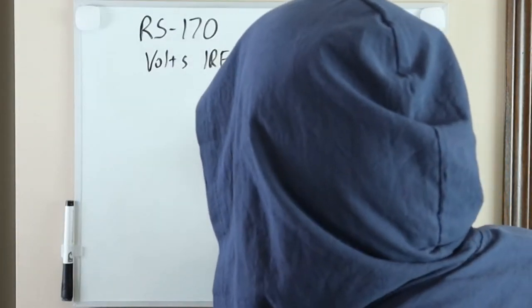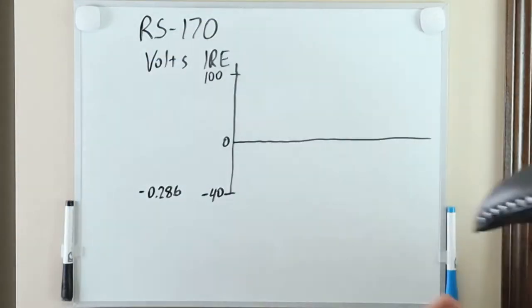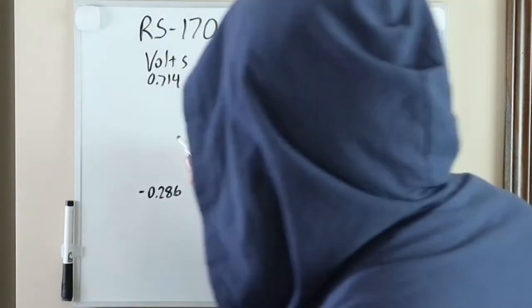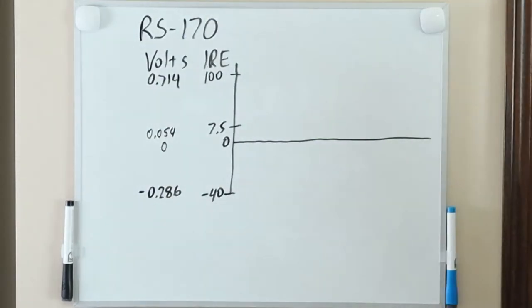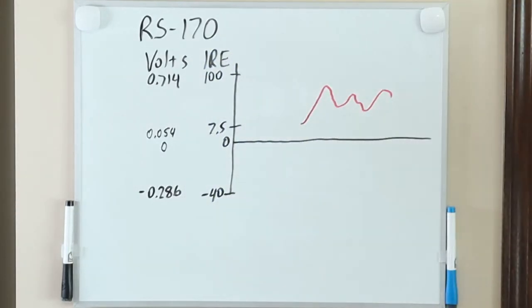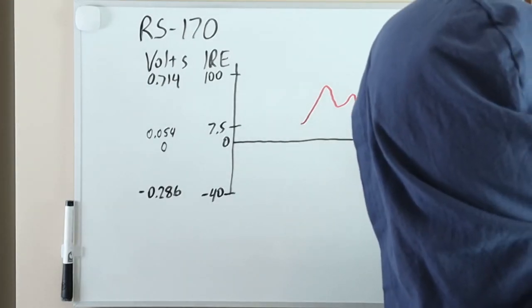Typically, the IRE of a composite video signal ranges from negative 40 up to 100, which is about negative 286 millivolts up to positive 714 millivolts. Pure black is defined by 7.5 IRE, which is about 54 millivolts, and pure white is 100 IRE, or 714 millivolts, and different shades of gray are in between these two. So, as the electron beam travels from left to right, the voltage can be varied from 54 to 714 millivolts to define the brightness of the line.